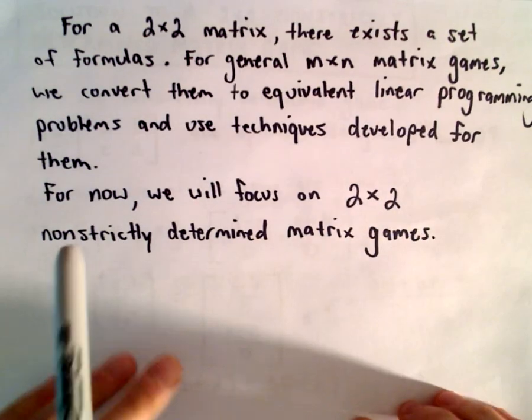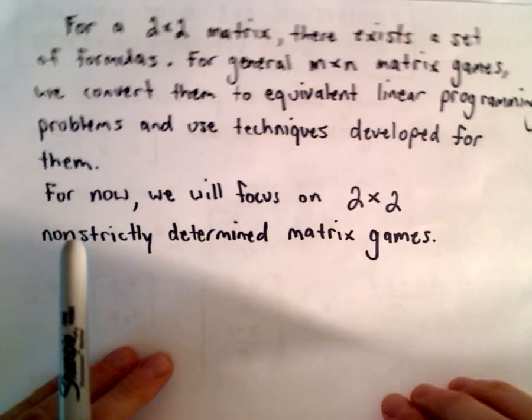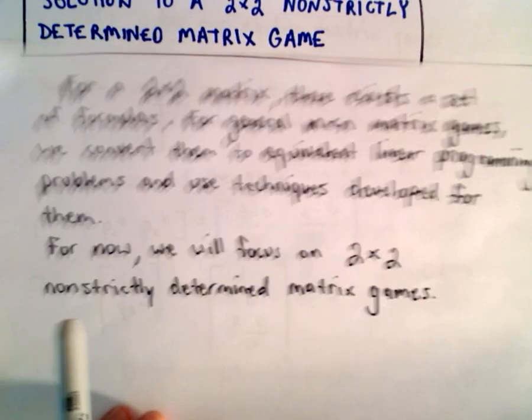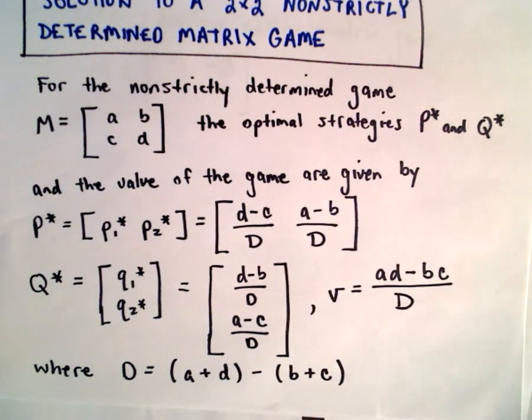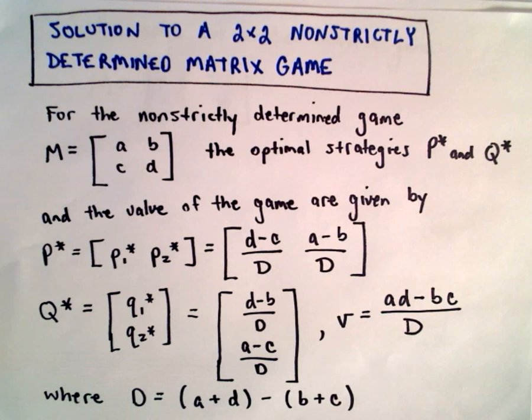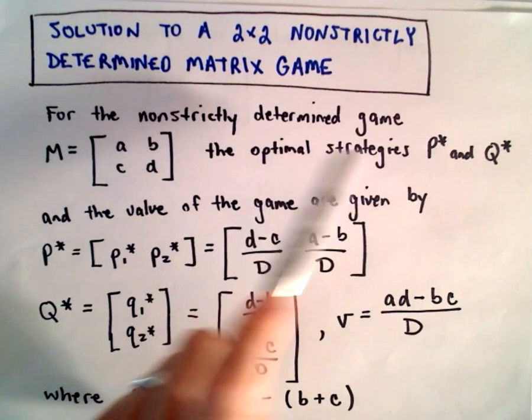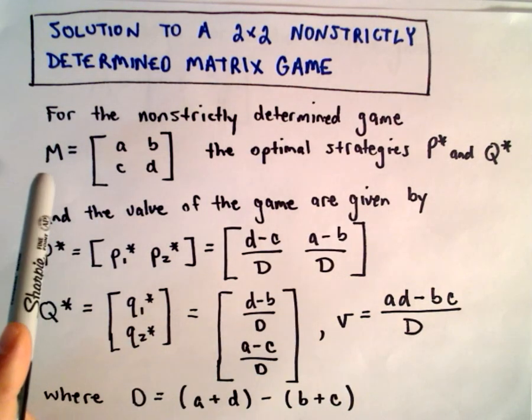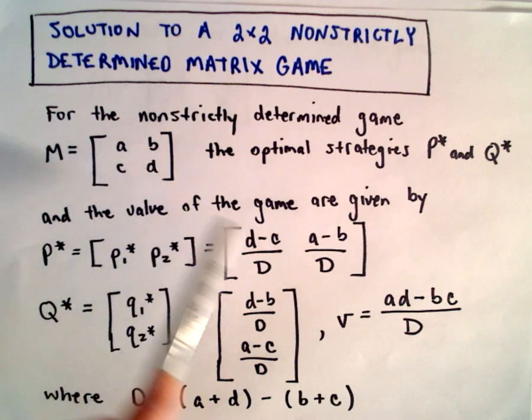So here is the formulas, again, without proof. But what it says is, for a non-strictly determined game, we've got the matrix game M with entries A, B, C, D.